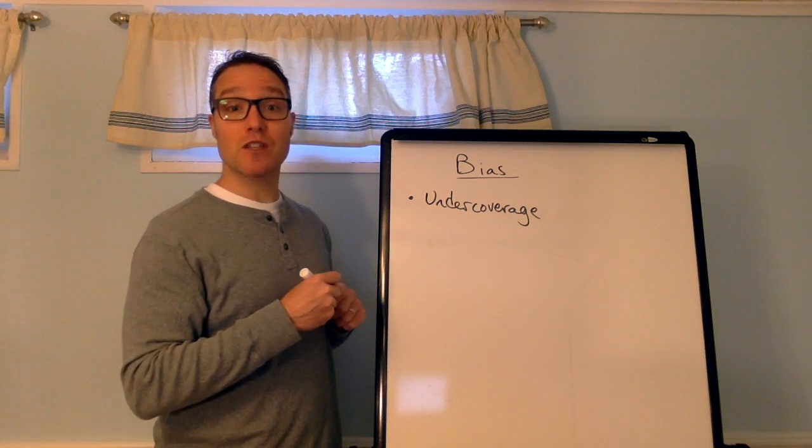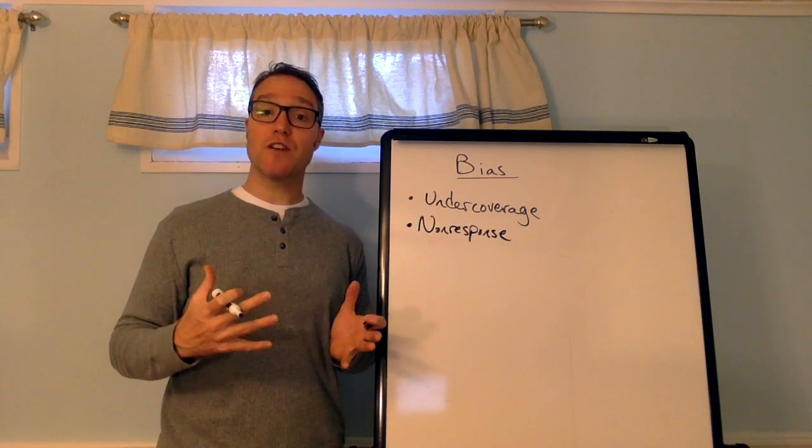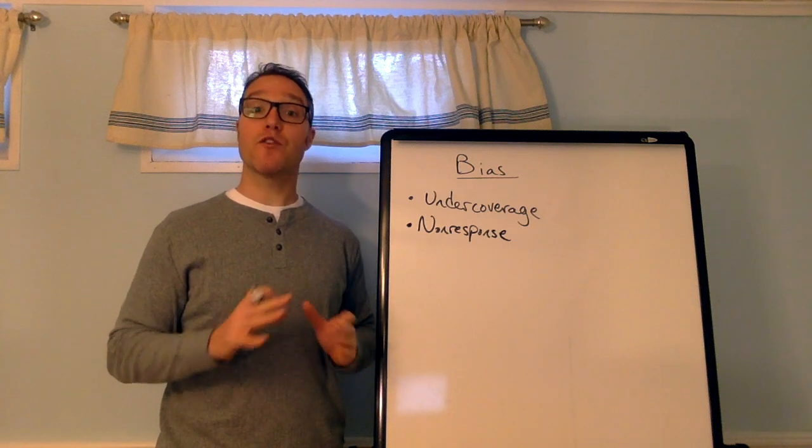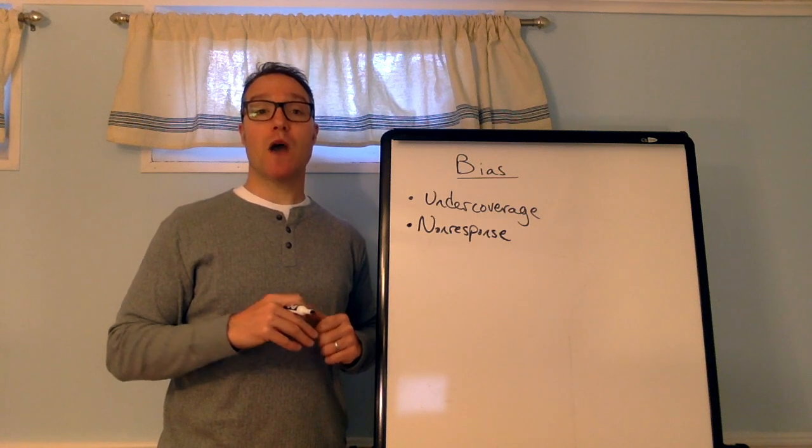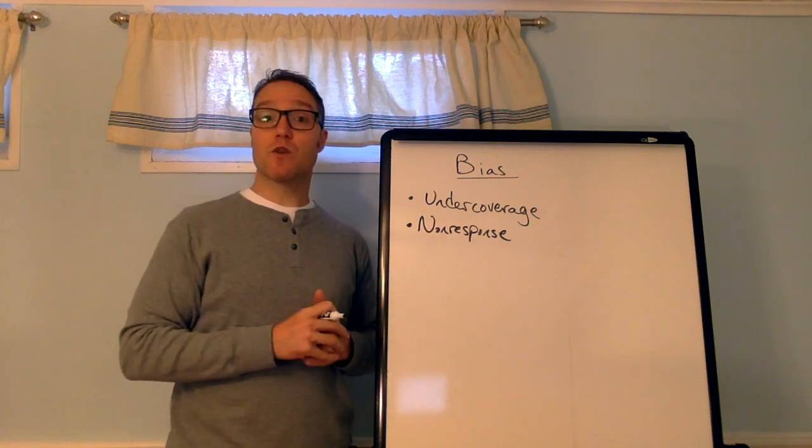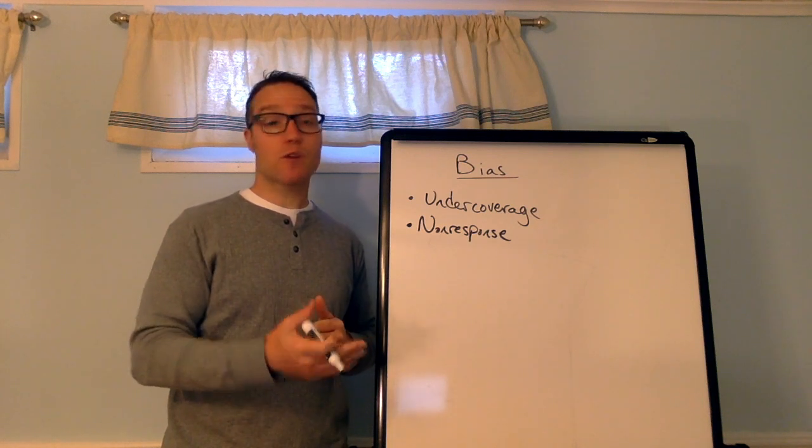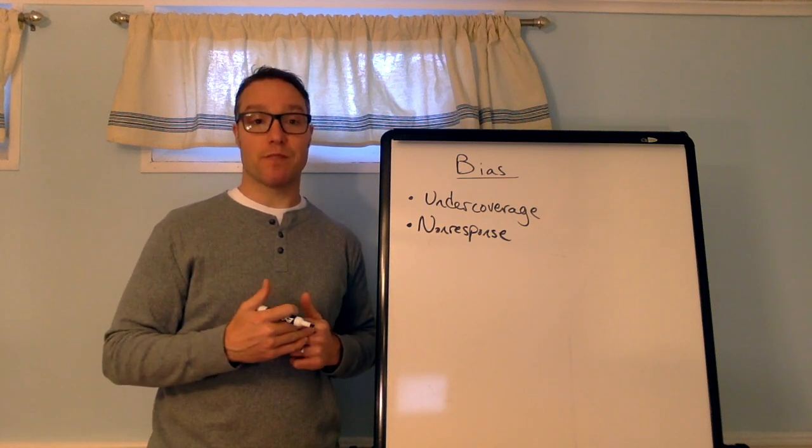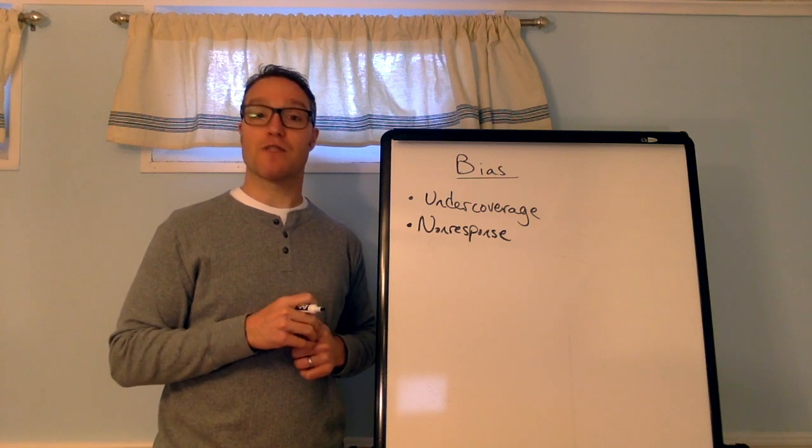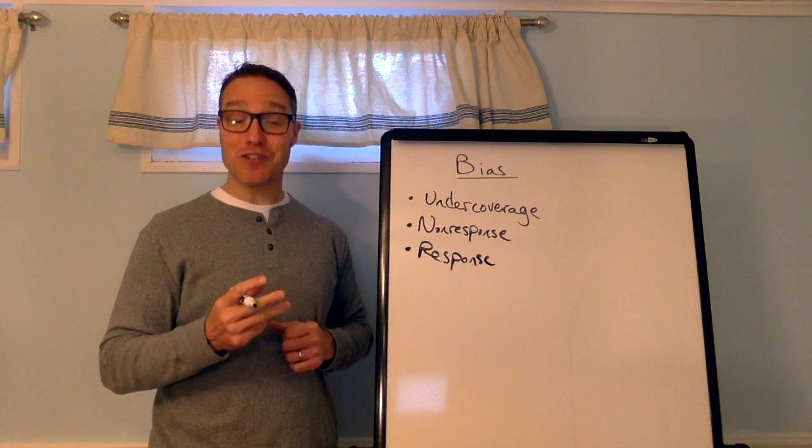Okay, the second type is non-response bias. Non-response bias occurs when an individual chosen for the sample can't be contacted or refuses to participate. So, this is where you have some random method where you select individuals to be in your sample. And, for some reason, they either choose not to respond or you cannot get in touch with them. That's called non-response bias. So, a study would suffer from non-response bias if you're unable to reach a person that's selected.